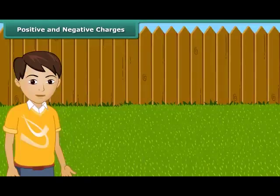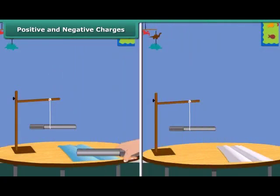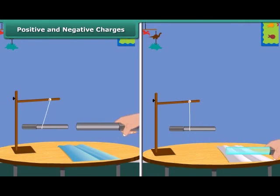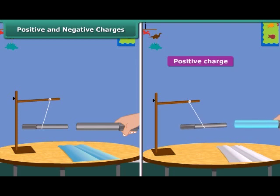The charges produced in the ebonite and the glass are different in nature. These two kinds of charges are called positive and negative charges. The positive charge is shown by the plus sign and the negative by the minus sign. Merely as a convention, charge on a glass rod rubbed with silk is taken as positive, and that of ebonite rod rubbed with woolen cloth is taken as negative.